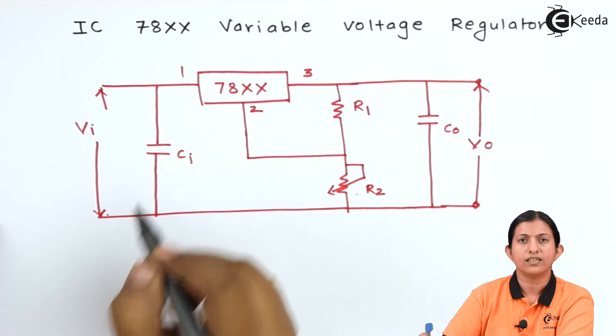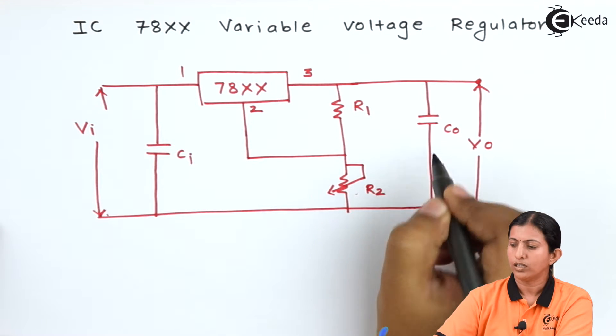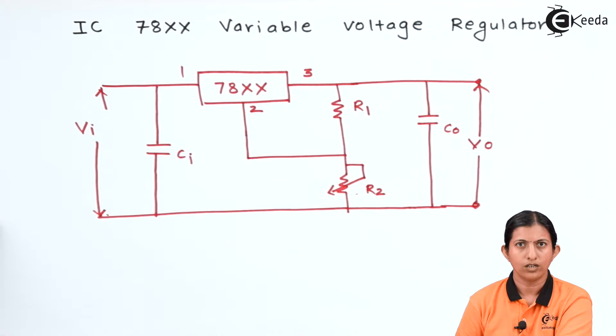This capacitor is connected when the distance between the voltage regulator and the filter is more than 3 inches. To improve the transient response, we use capacitor CO which provides stable output.